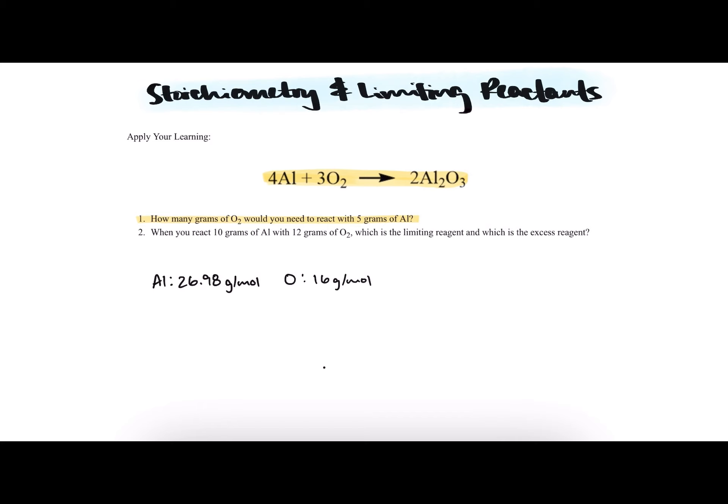And we're given the starting amount of aluminum, and we want to get from grams of aluminum to grams of oxygen gas.